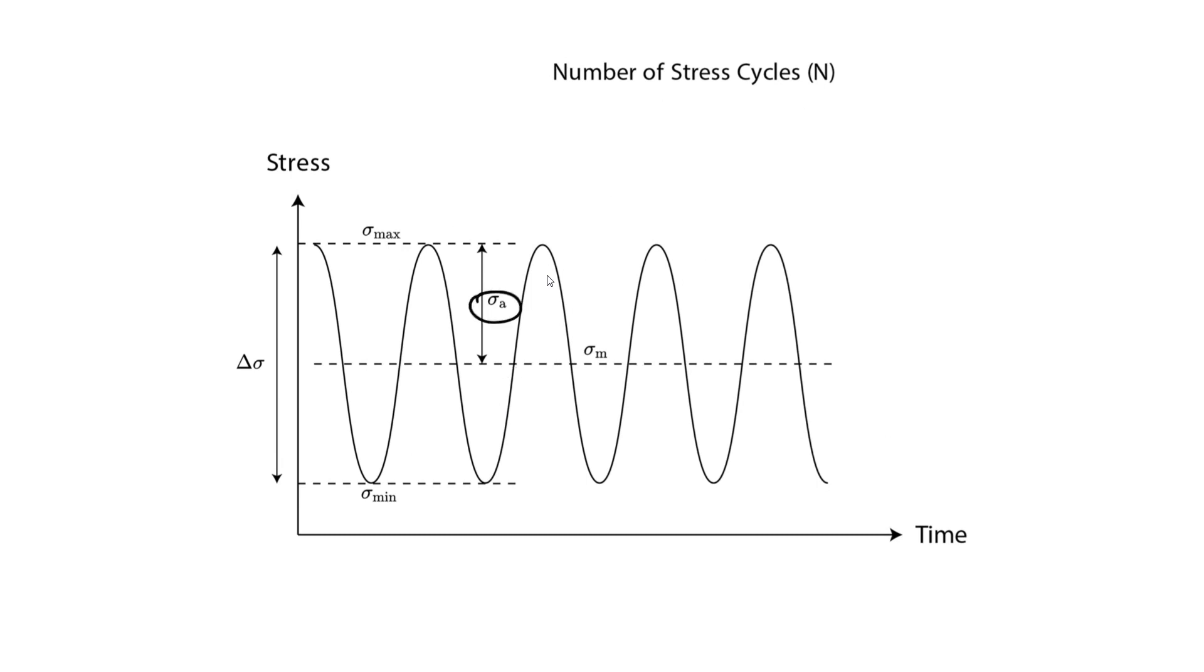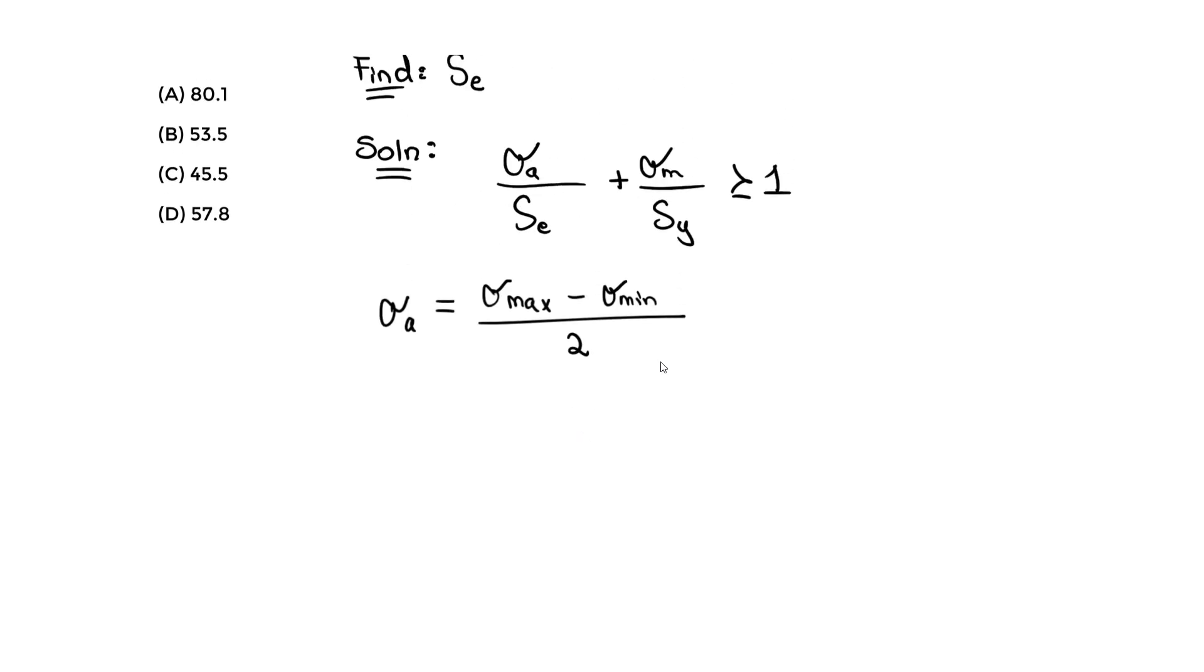We talked about this in the last video. The alternating is this part on the diagram. We take the maximum, subtract the minimum value, and divide by 2 to get the alternating term. You have to make sure you subtract correctly—we're finding this amplitude.